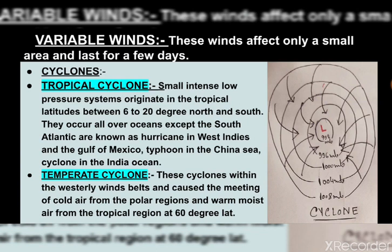Now let us learn about variable winds. These winds affect only a small area and last for a few days. The best example of a variable wind is cyclone and anticyclone. There are two types of cyclone: tropical cyclone and temperate cyclone. A cyclone is a rotating storm with low pressure at the center — as you can see in the diagram, L means low pressure — and high pressure at the periphery. The winds blow from the outer areas towards the low pressure at the center. In the northern hemisphere, winds within a cyclone move in an anticlockwise direction, and in the southern hemisphere they move in a clockwise direction.